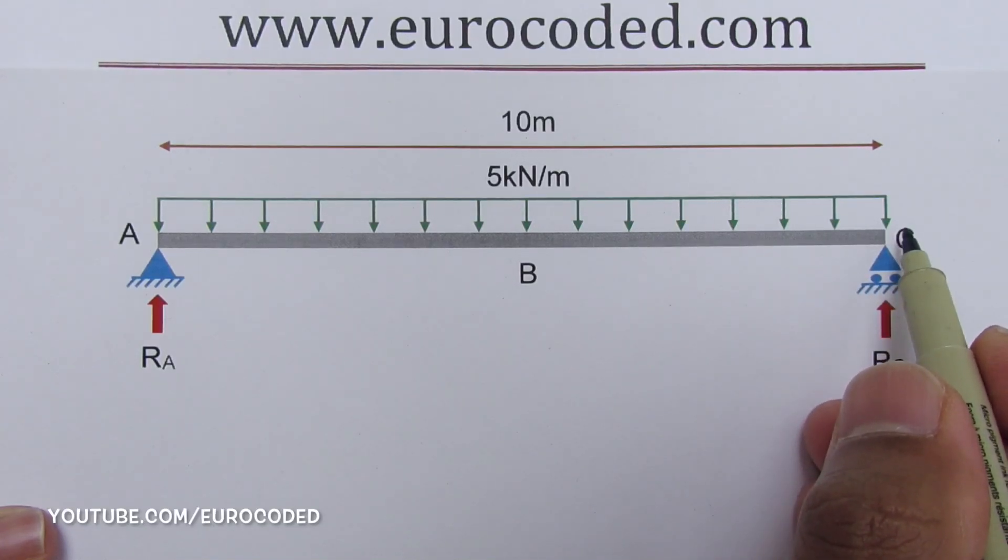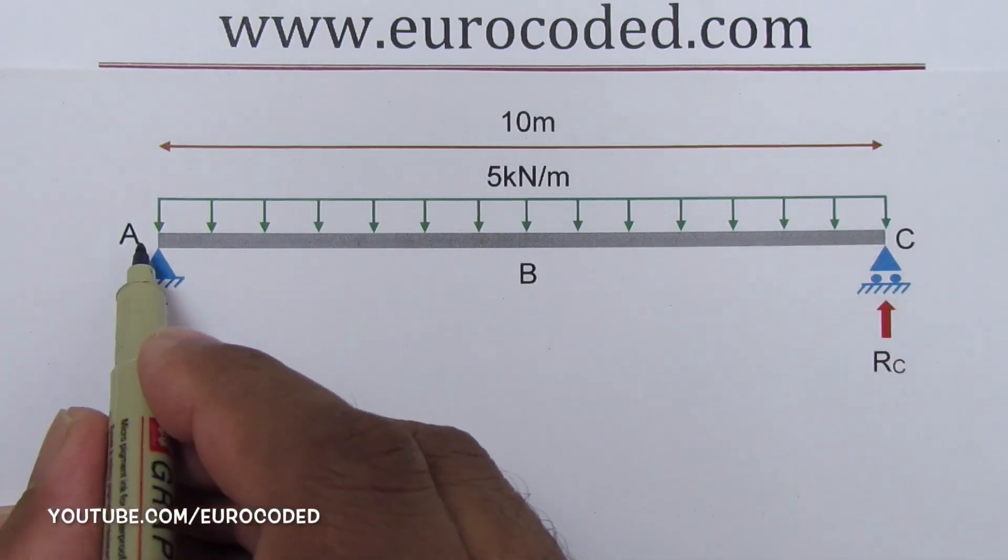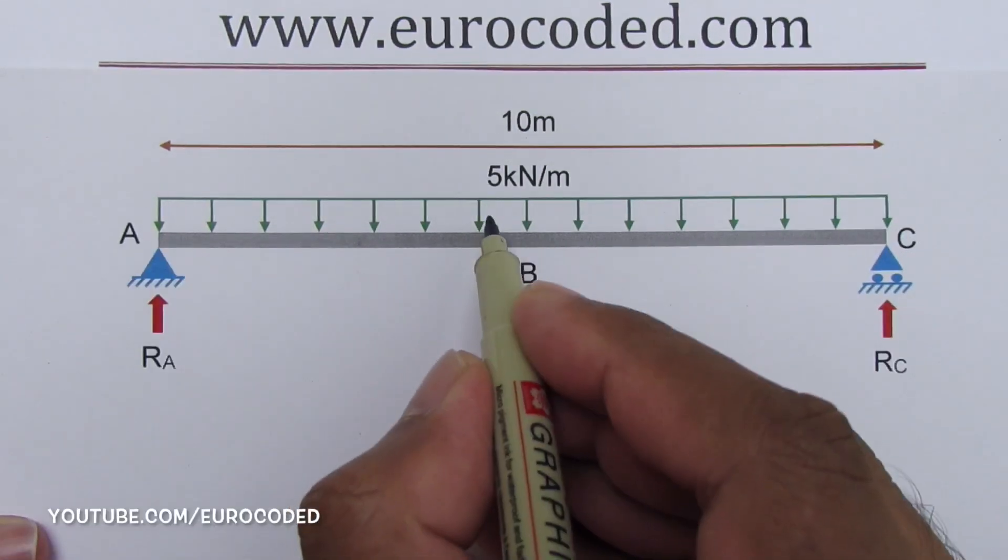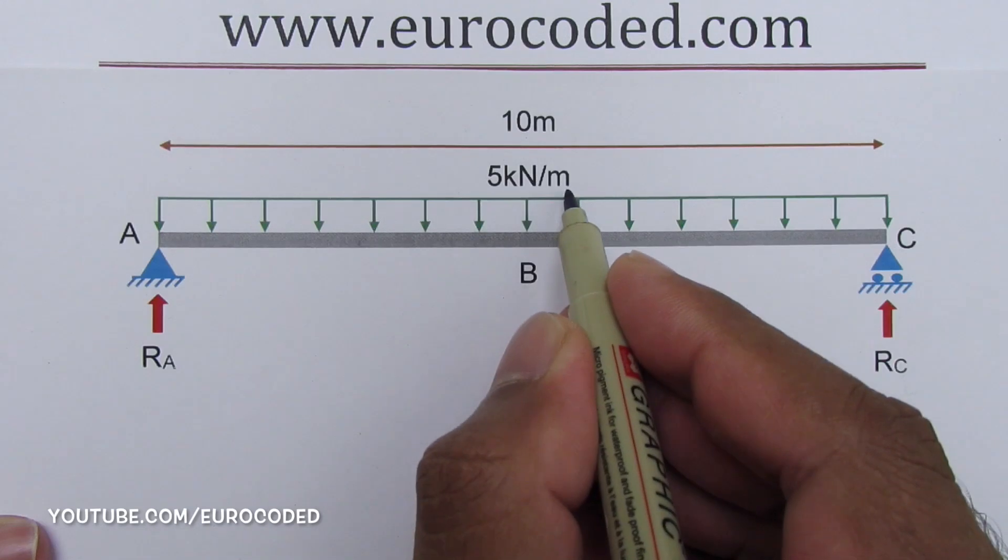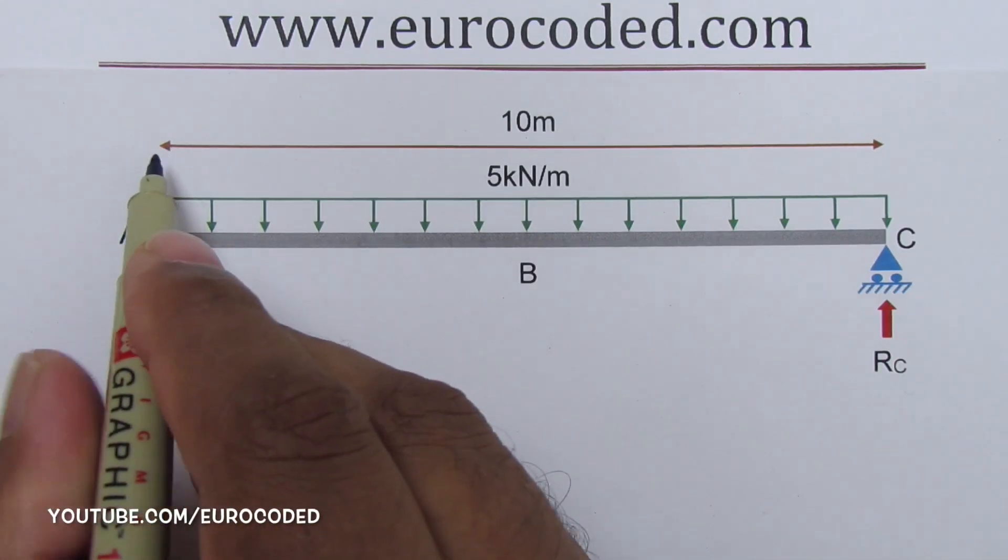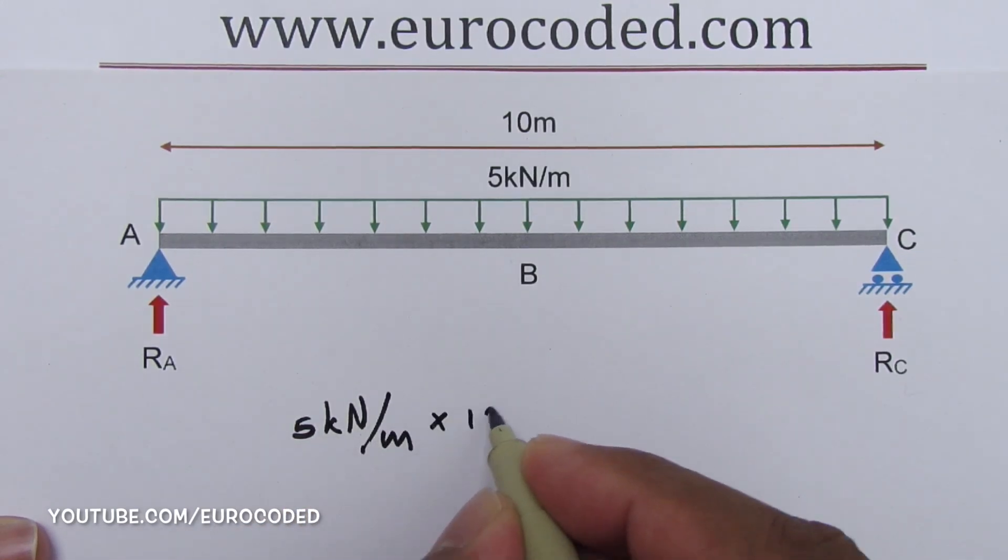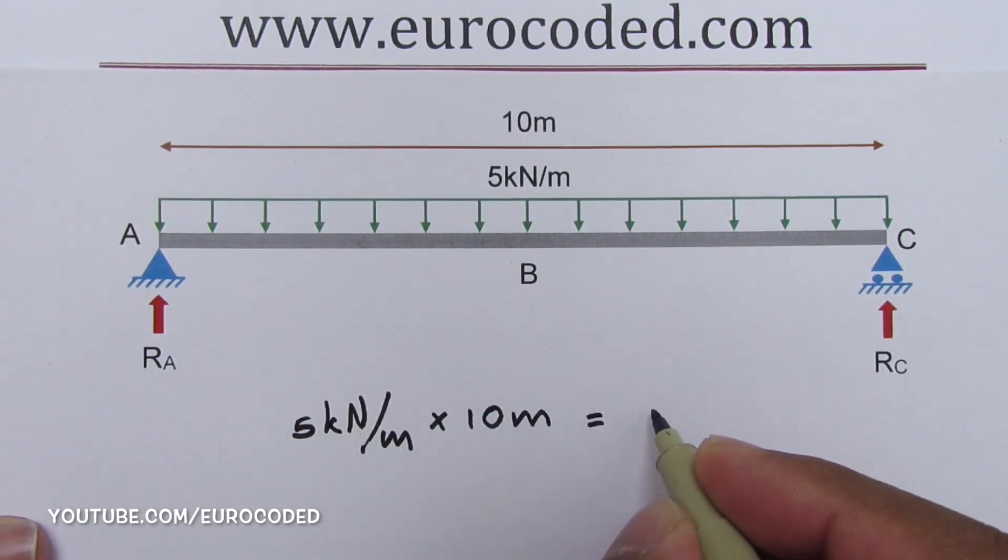We have 5 kilonewtons per meter applied over 10 meters, so we can write this is equal to 50 kilonewtons.